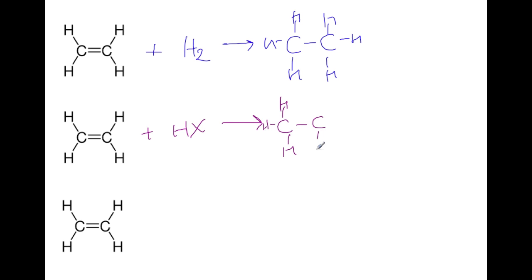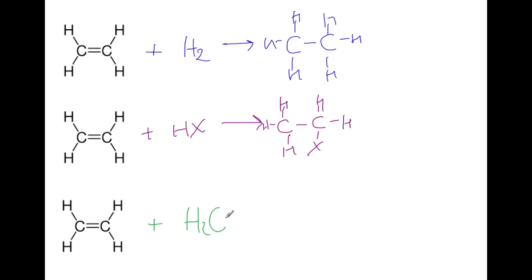If you have an asymmetrical alkene, you need to be aware that you'll get a mixture of products where the X could be on different carbons. Another reaction we can carry out is by adding water, which allows us to produce alcohols.